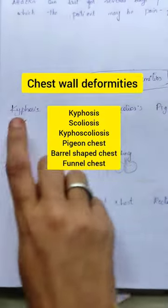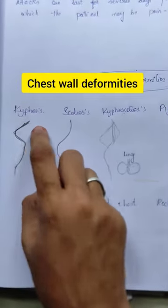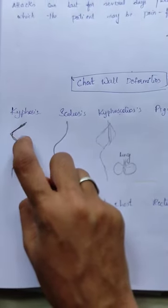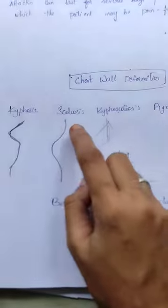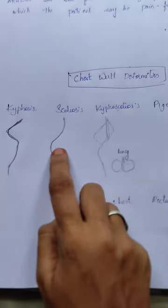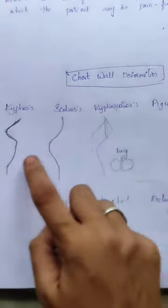Chest wall deformities. Kyphosis — this is the back side, rotation of the back. Next is scoliosis, which is the lateral curvature of the spine.